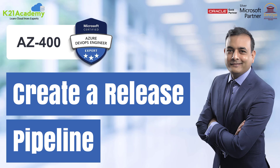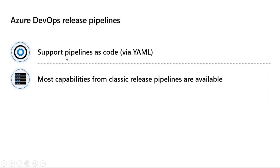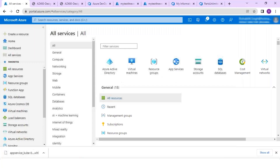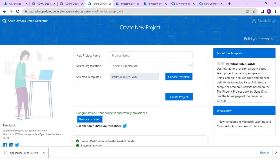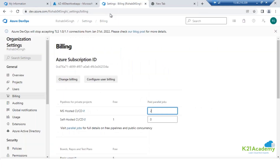Welcome back to another session by K21 Academy. Today our expert trainer will be talking about how you can create a release pipeline. What is Azure's supported pipeline as code via YAML? We have both options available - either you can go via YAML pipeline or you can go via the classic editor. The classic editor you must have seen multiple times as part of the training itself, and it already has templates available.